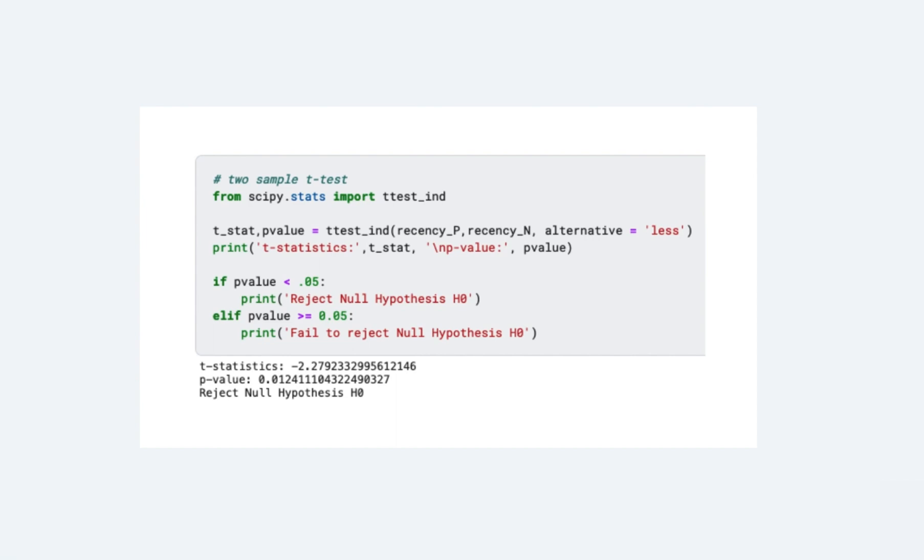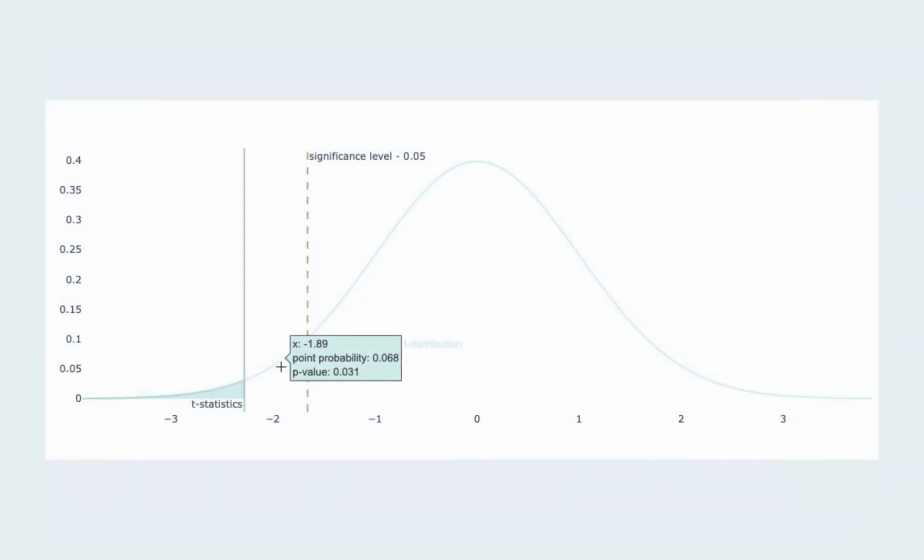Here I use Plotly to visualize the p-value in t-distribution. Hover over the line and see how point probability and p-value changes as the t-statistics value changes. If you want to play around with this interactive chart, check out my blog, the link is in description below.